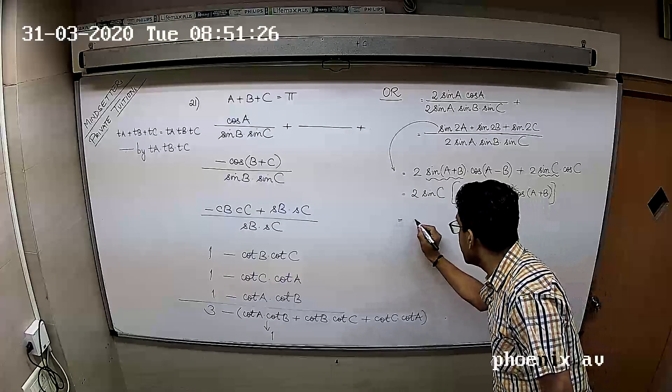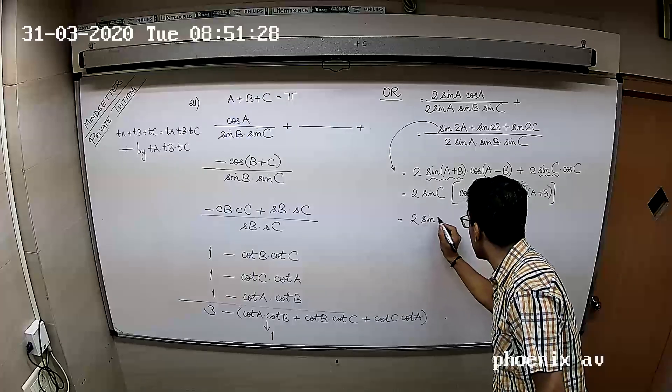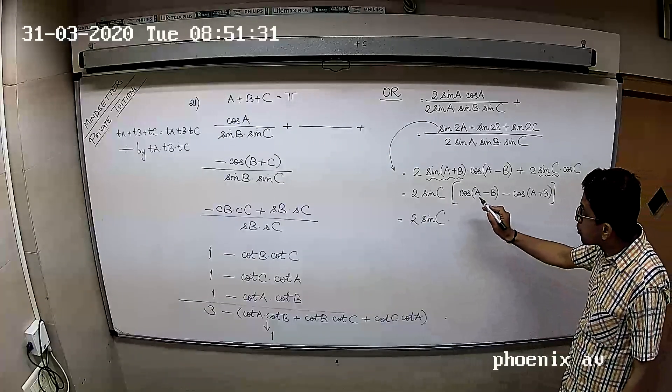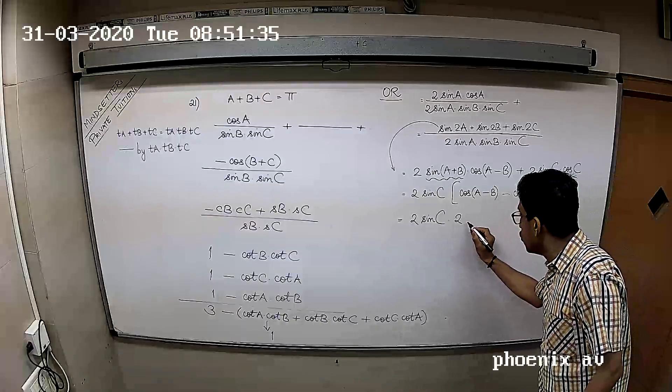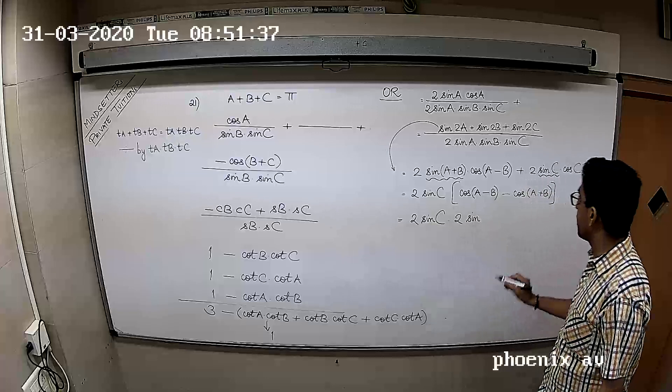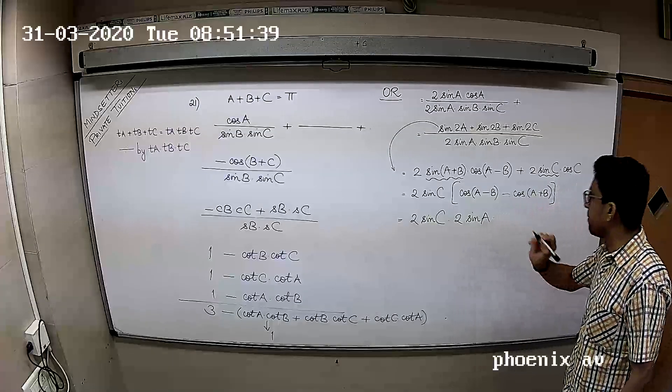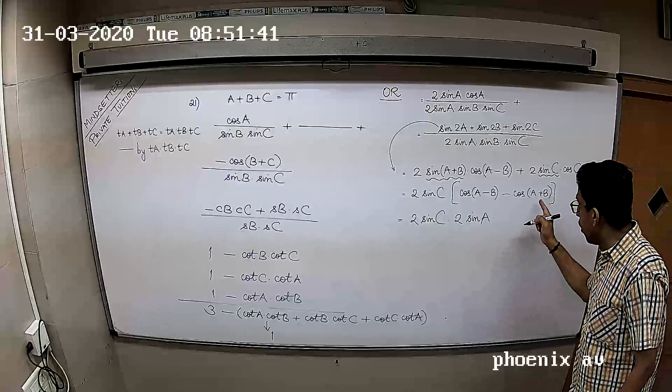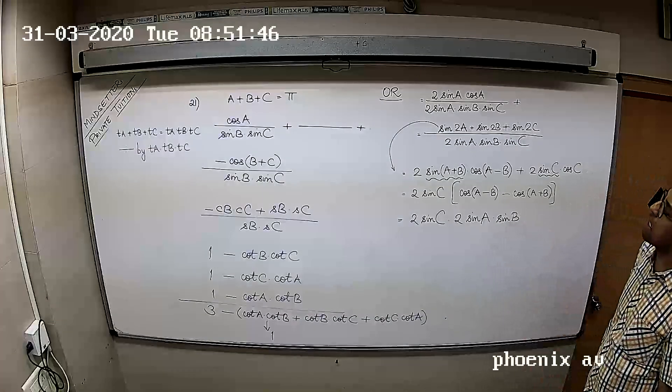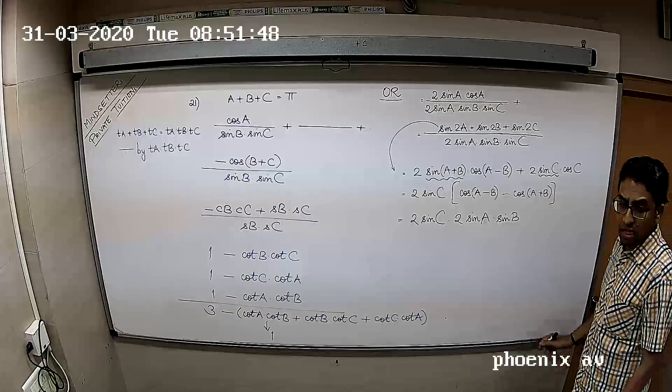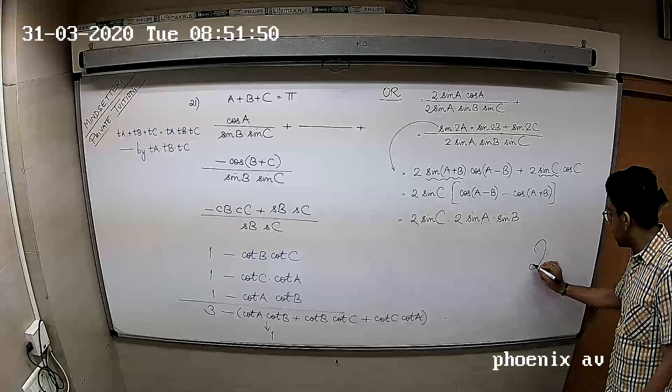This will lead you to 2 sin C into, now this is cos C minus cos A plus B. Cos C minus cos D is 2 sin of C plus D by 2, sin of D minus C by 2. Hence the final answer will be 2.